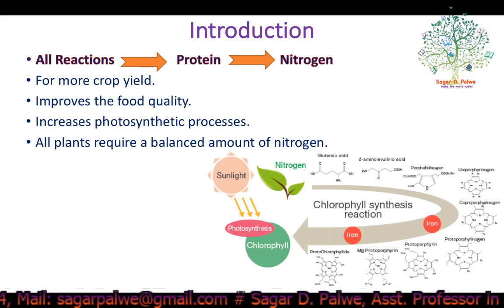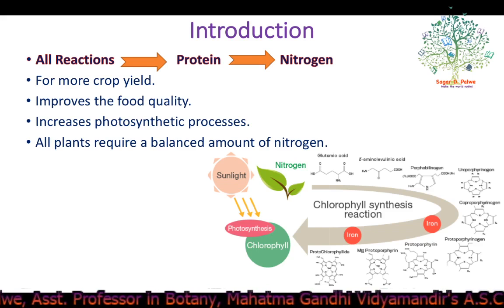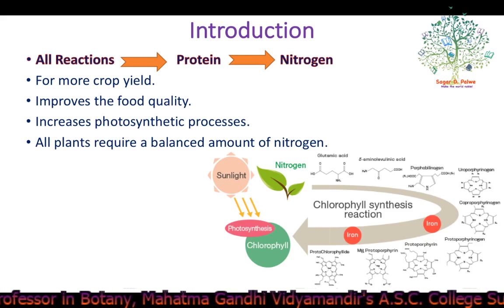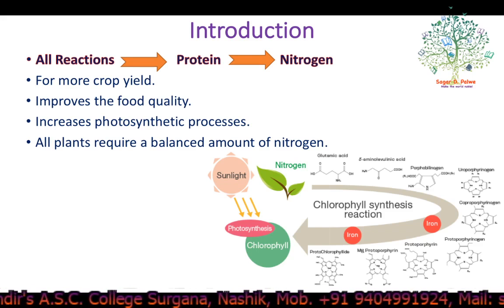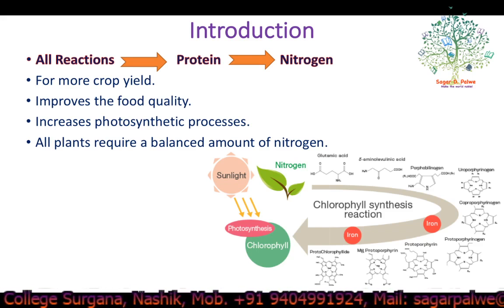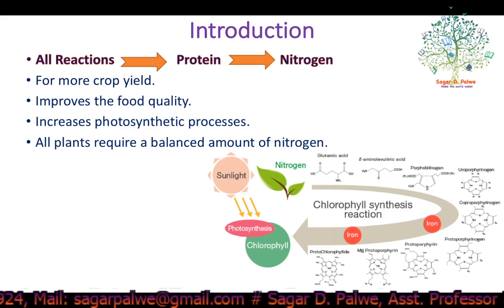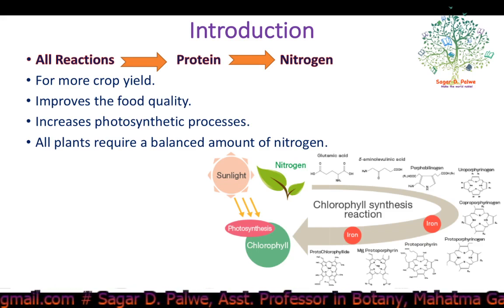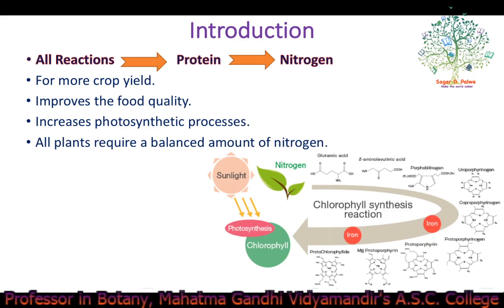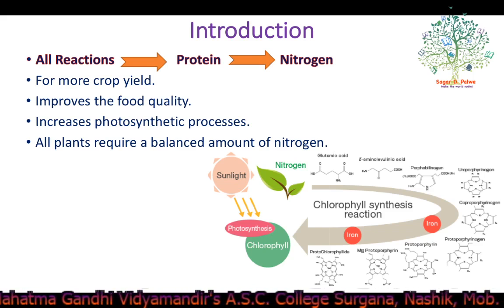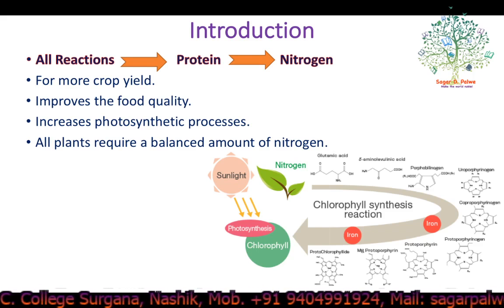However, nitrogen can be fixed — that is, it can be converted to ammonia through biological, physical, or chemical processes. Biological nitrogen fixation, the conversion of atmospheric N2 into ammonia (NH3), can be carried out by only prokaryotic organisms such as soil bacteria or cyanobacteria. The most important source of biological nitrogen fixation is the symbiotic interaction between soil bacteria and legume plants.